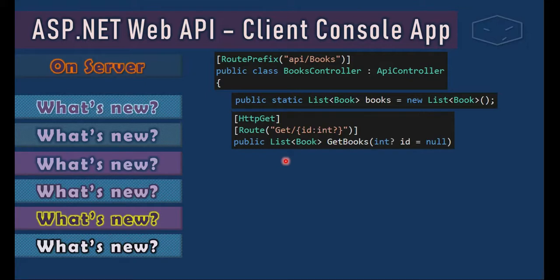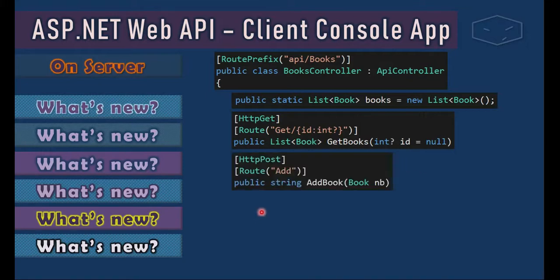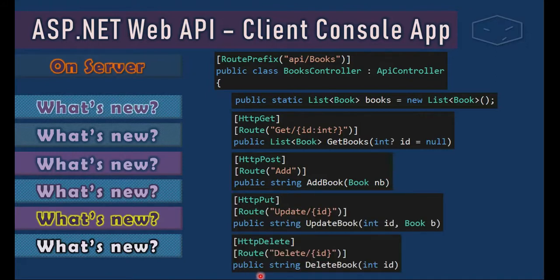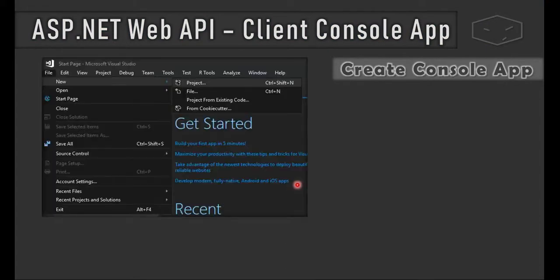It contains a GET action that returns the list of books and receives an integer — that integer can be null. If we provide an integer, it will return a list with one book if found. If we don't provide an integer, it will return all the books. It also contains a POST action to add a book, an update, and finally a DELETE action.